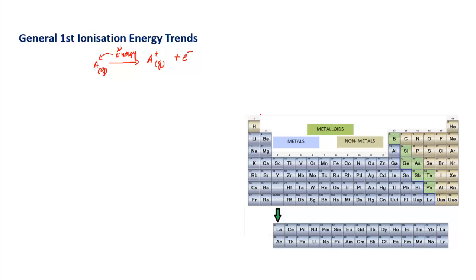Ionization energy tells us how strongly the valence electron is held by the nucleus. High ionization energy means the electron is very strongly attracted by the nucleus and it's very difficult to remove. Very low ionization energy means the electron is not attracted strongly. As you go down the group, size increases, the electron is farther from the nucleus, attraction decreases, so ionization energy decreases down the group.